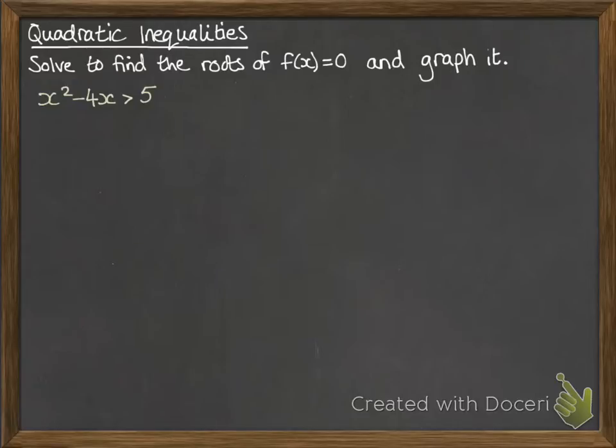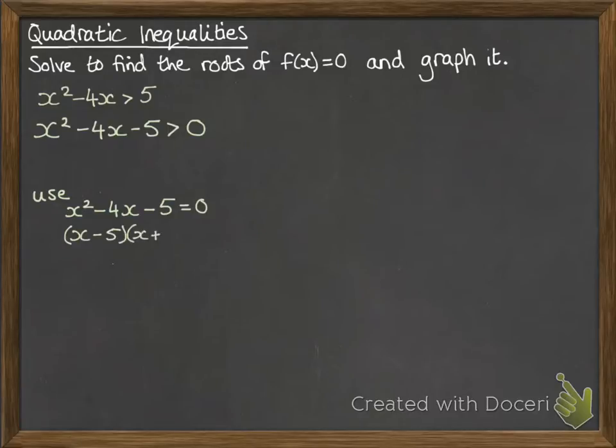x squared minus 4x is greater than 5. So let's rearrange this to look like a quadratic that we're used to. Now with that one we can factorise it, but we're going to use the quadratic equal to zero to find the roots. So factorise it and we get minus 5 plus 1 is equal to zero. So the roots of our equation are x equals 5 and minus 1.